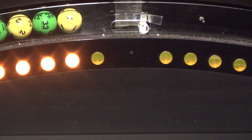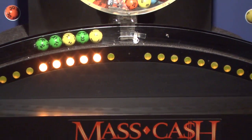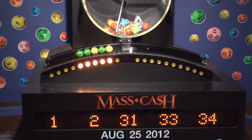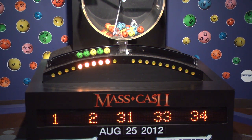Once again, the winning Mass Cash numbers for Saturday, August 25, are 1, 2, 31, 33, and 34.